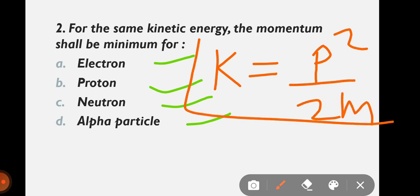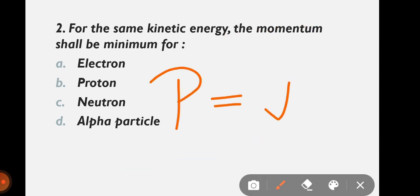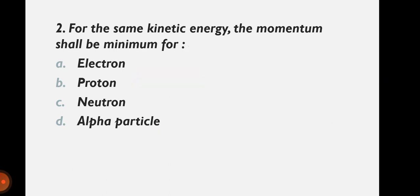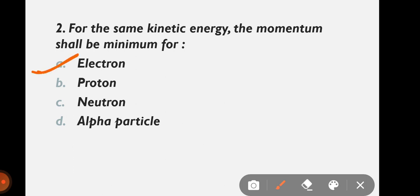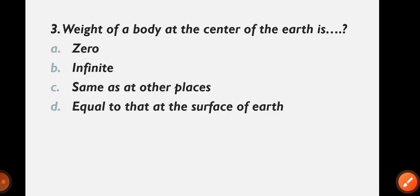We look at the relation between kinetic energy and momentum: KE = P²/2M. From this, P = √(2M × KE), so momentum depends on the square root of mass. Since the kinetic energy is the same for all four, the one with the least mass — the electron — will have the minimum momentum. Correct answer is electron.